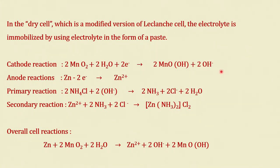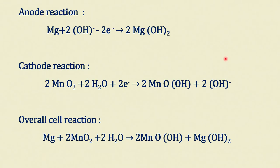You must remember these cell reaction expressions, especially for the examination. Coming back to the discussion, the anode reaction: Mg²⁺ will react with 2OH⁻ ions to give magnesium hydroxide. The overall cell reaction is: Mg + 2MnO₂ + 2H₂O → 2MnOOH + Mg(OH)₂.